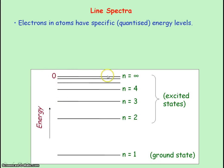When n equals infinity, the energy of the electron is zero. That means the electron is a free electron and is no longer bound to the atom.